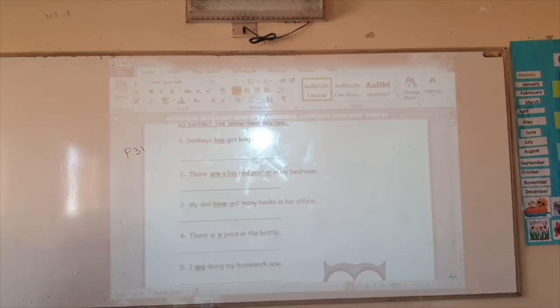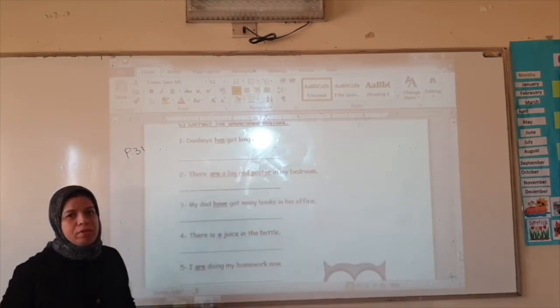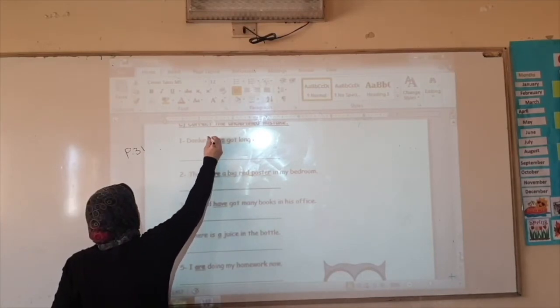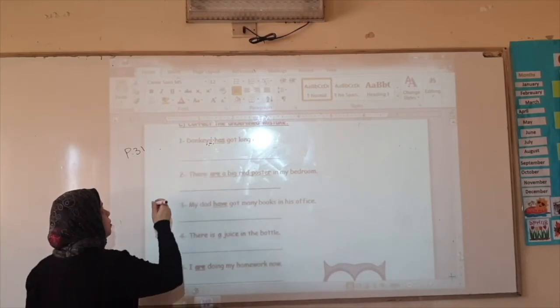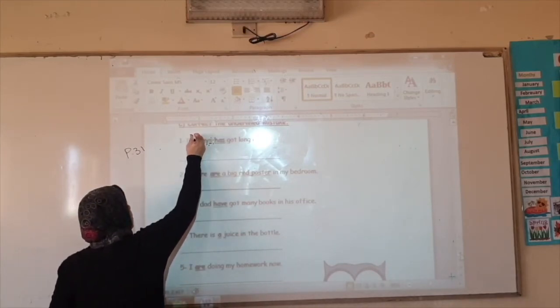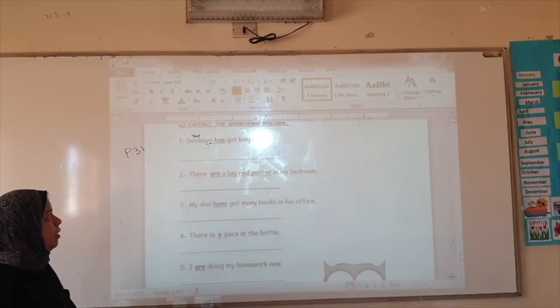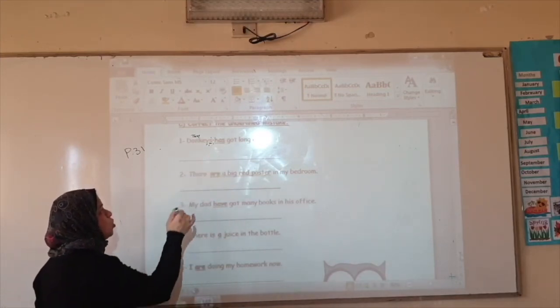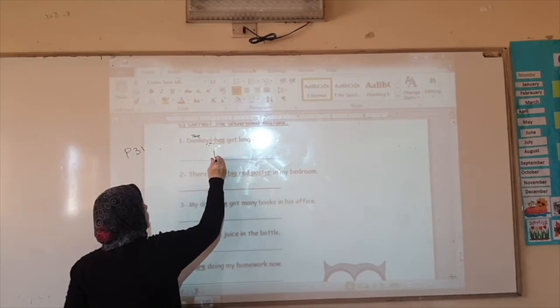Number one. Donkeys has got long ears. We have got at the end the super S. Donkeys. So I'm going to write 'they' in small handwriting over the word. What do I use for they? Do we use has or have? This is a mistake, so I'm going to correct it. I'm going to write have instead of has.